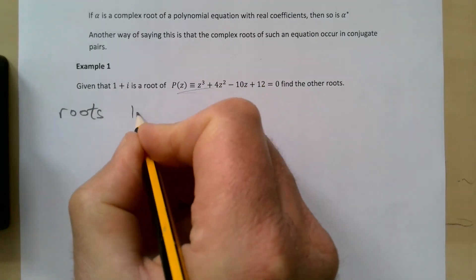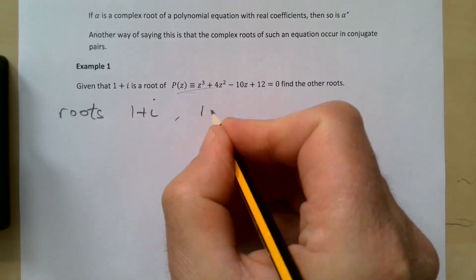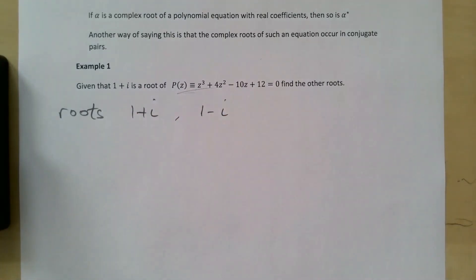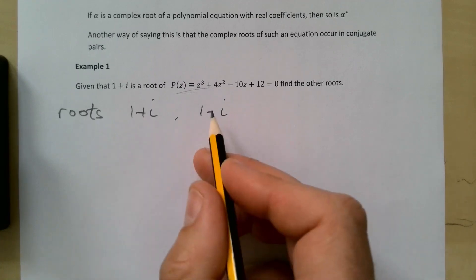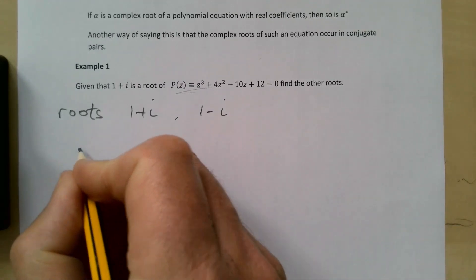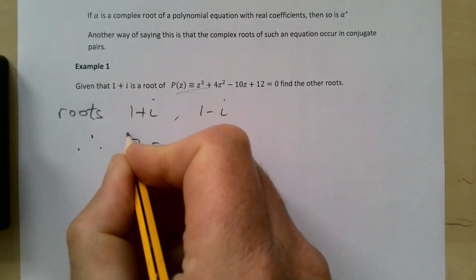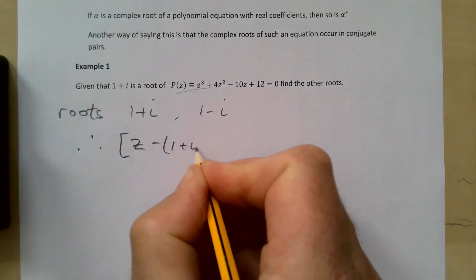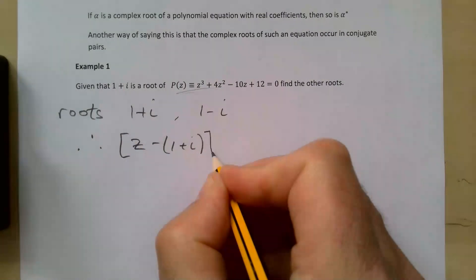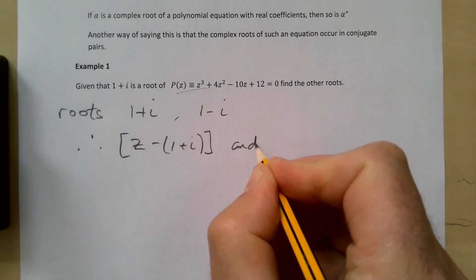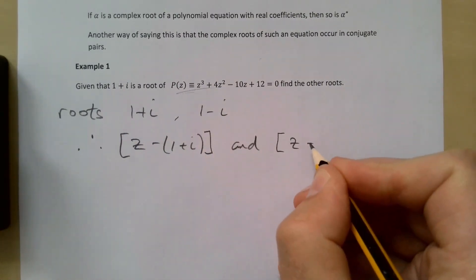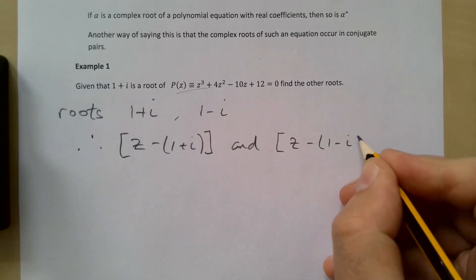For example, we knew 2 was a root of an equation, just a regular number 2, that means x-2 is going to be a factor. So the two factors that we have here: therefore we know that z-(1+i) has to be a factor, and z-(1-i) is also a factor.